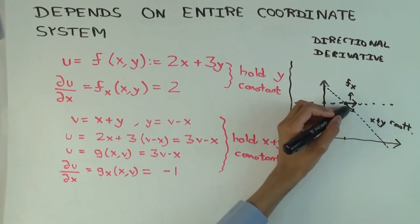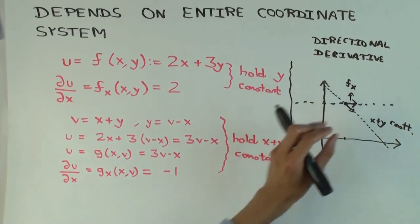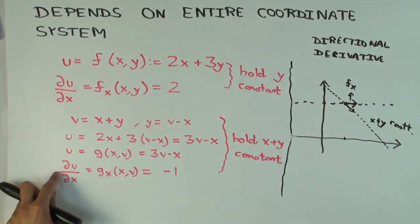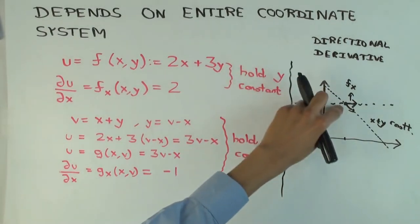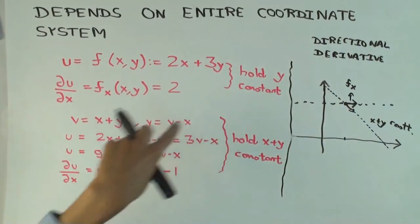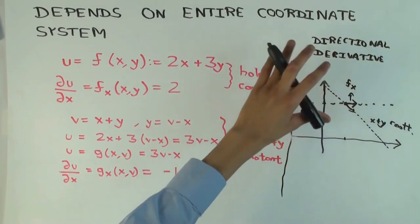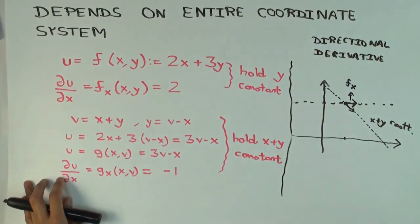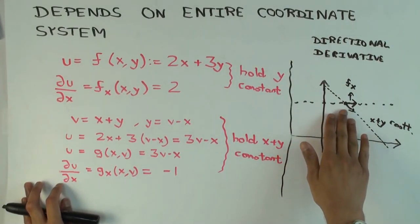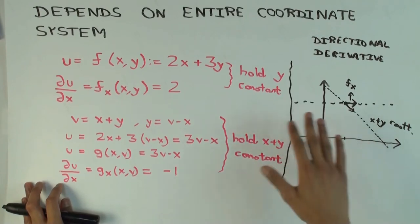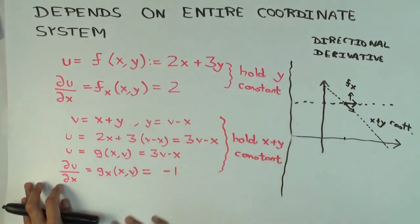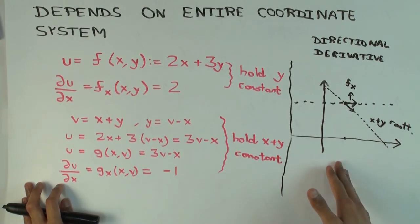And so this partial is representing sort of the directional derivative in this direction. Now it's not technically the directional derivative because of some issues of scaling, but this partial is representing the derivative when you move in this direction. And so that's why these two are different. They're representing derivatives in different directions.